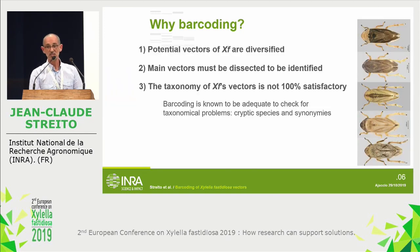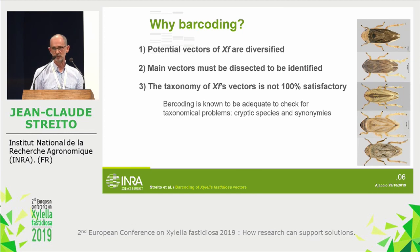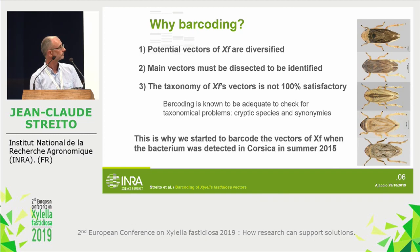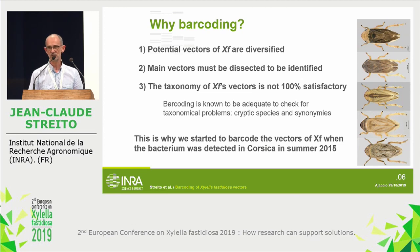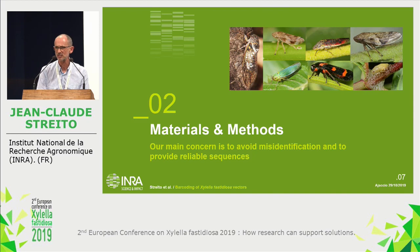The last point is that the taxonomy of vectors of Xylella is not 100% satisfactory — we have a lot of problems. Barcoding is known to be an adequate method to check for taxonomical problems such as cryptic species or synonymy. It's not enough to solve the problem, but you can see them. This is why we started to barcode vectors of Xylella when the disease was discovered in Corsica in 2015.